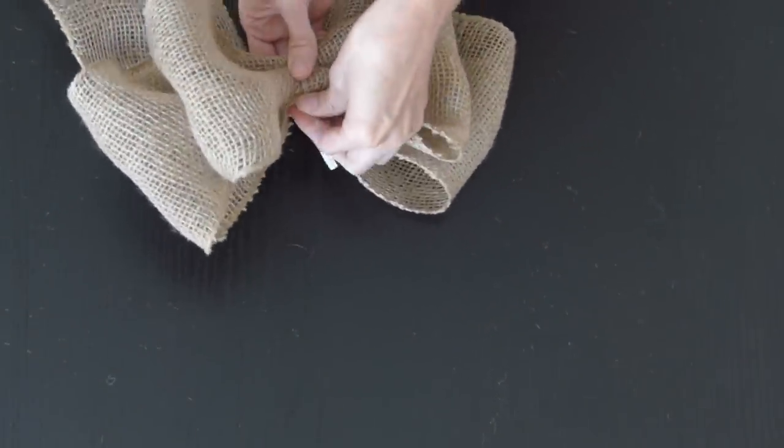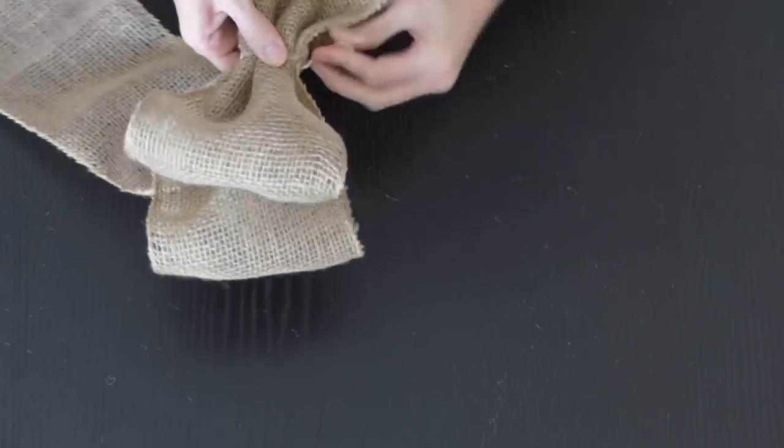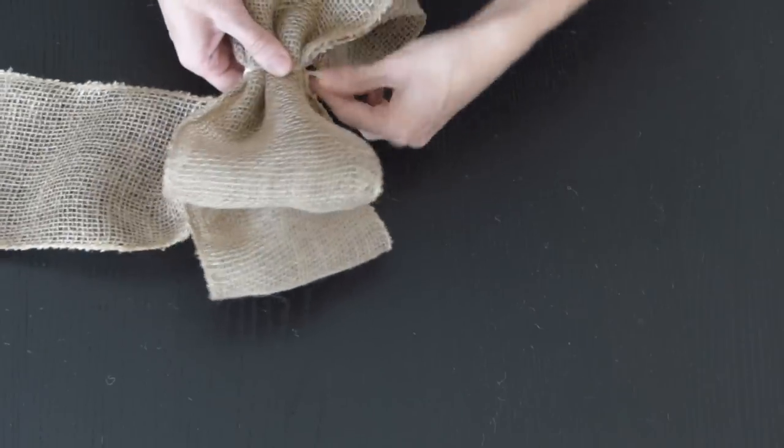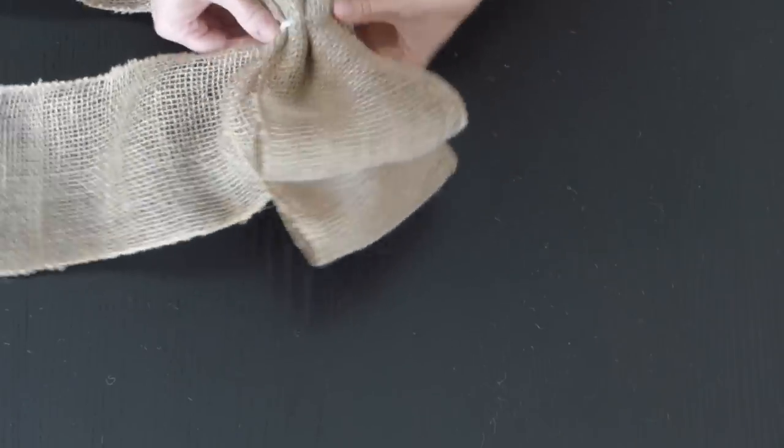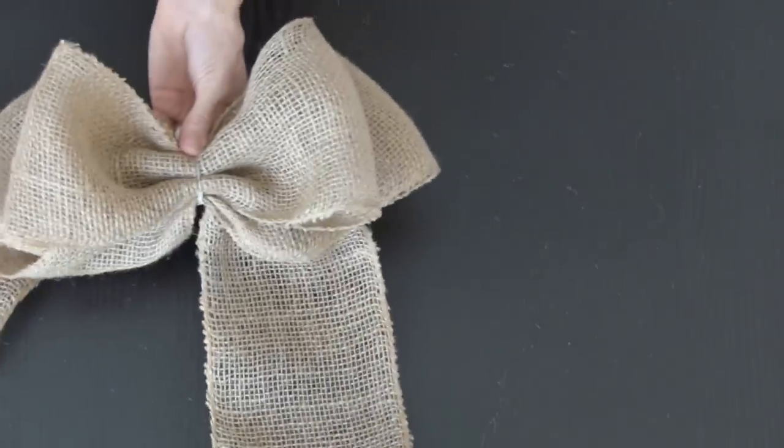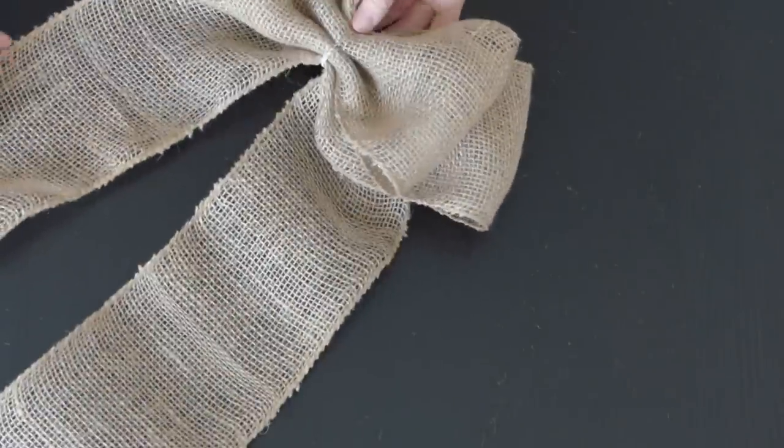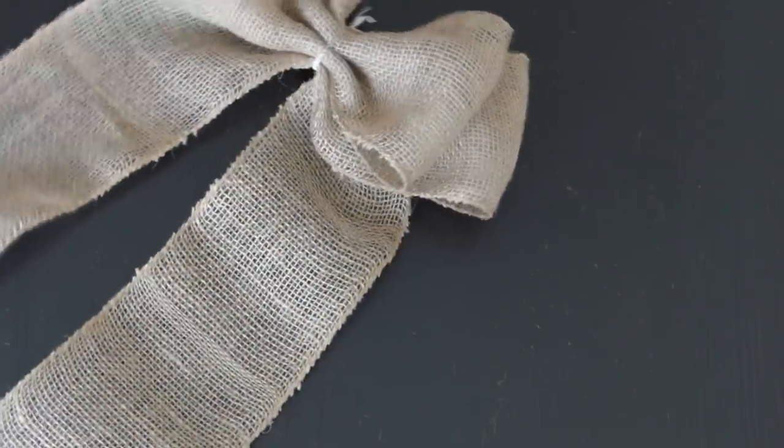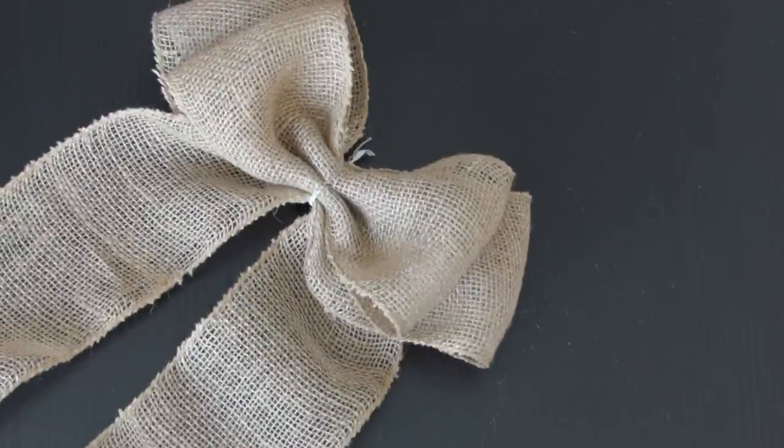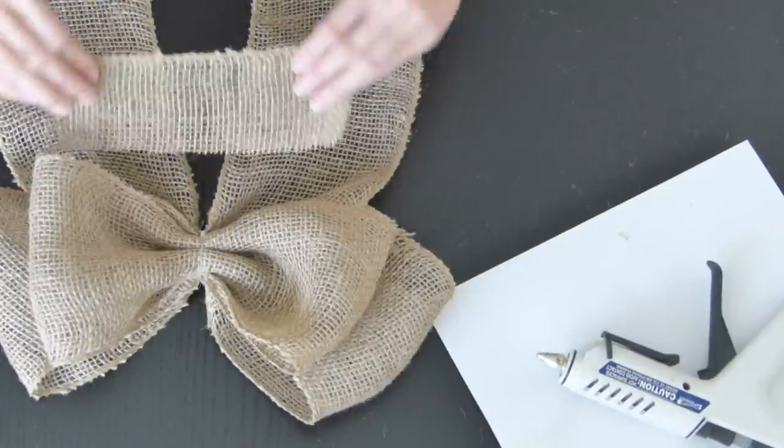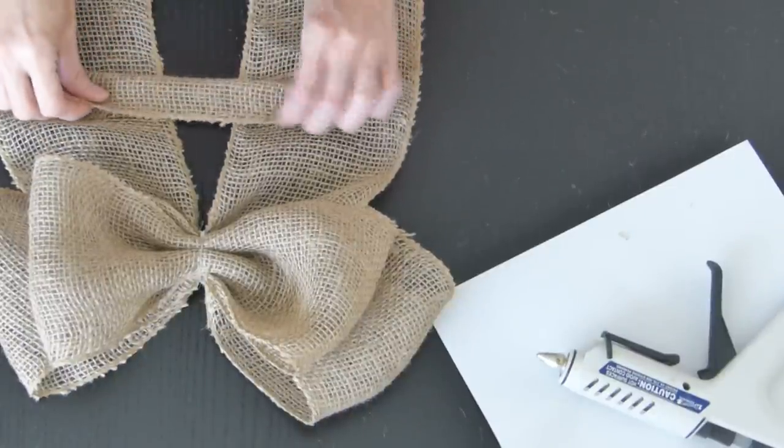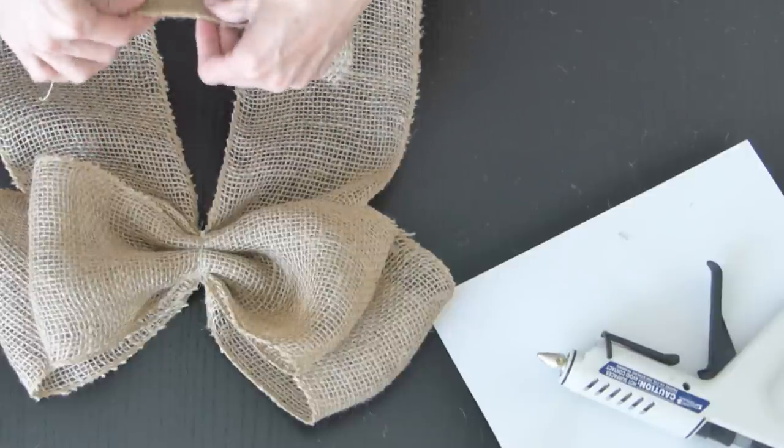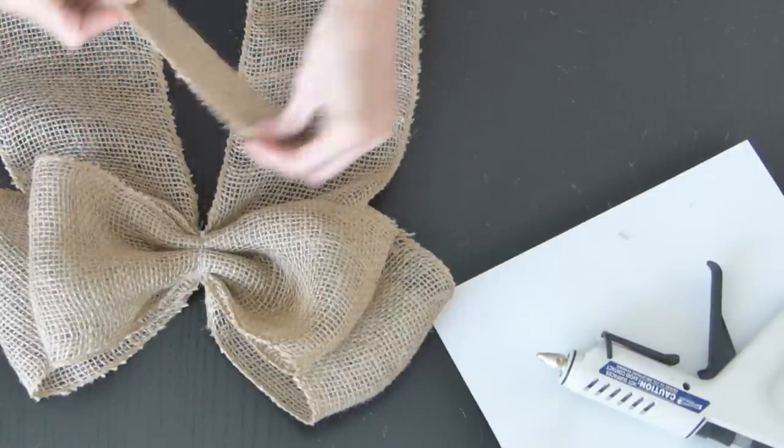Once you get that done like you see I have it here, grab that 8-inch strip of burlap ribbon, fold it in half, then wrap it around the bow.